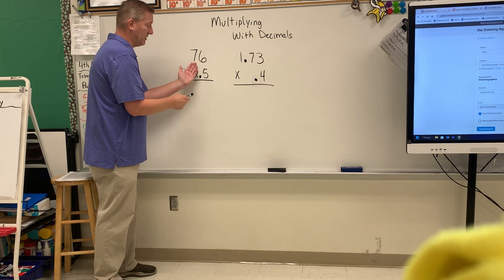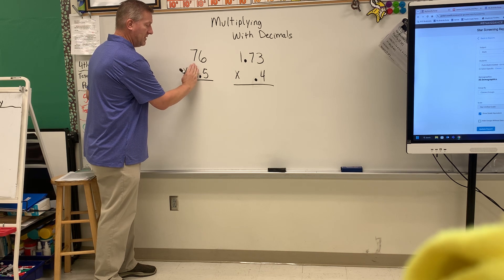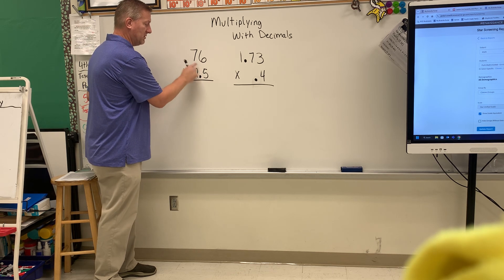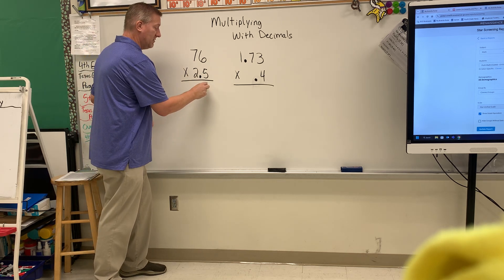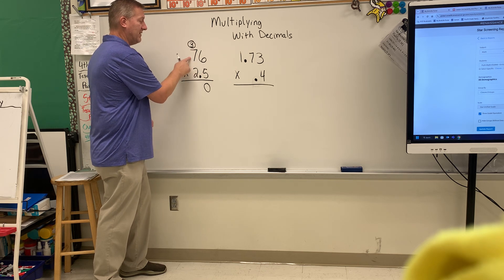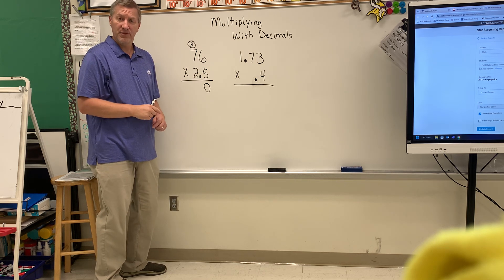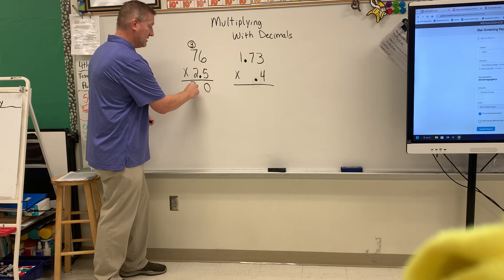You cover up this first digit and all you do is multiply these numbers. So 5 times 6 is 30. You put the ones down. You carry the 3. 5 times 7 is 35 plus 3 is 38.